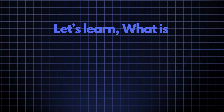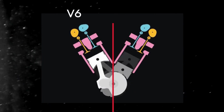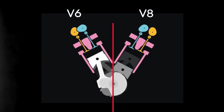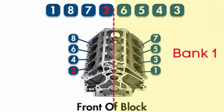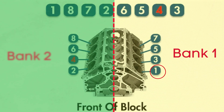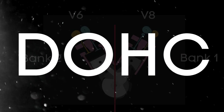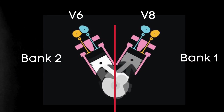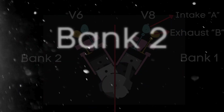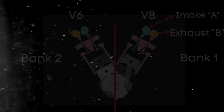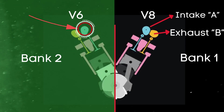Now let's break down what the bank two intake camshaft actually is. In engines with multiple cylinder banks, like V6 or V8 engines, you'll have two sides, or banks, of cylinders. Bank one typically refers to the side of the engine where cylinder one is located, and bank two is on the opposite side. For engines with dual overhead camshafts, DOHC, each bank has two camshafts — one for intake valves and one for exhaust valves. So when we talk about the bank two intake camshaft, we're referring to the camshaft that controls the intake valves on the opposite side of the engine from where cylinder one is located.